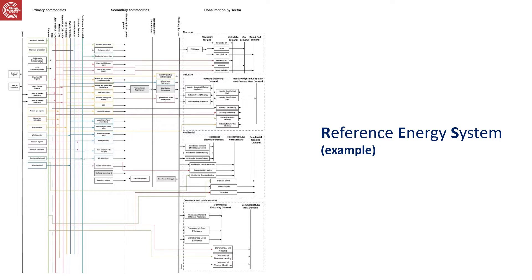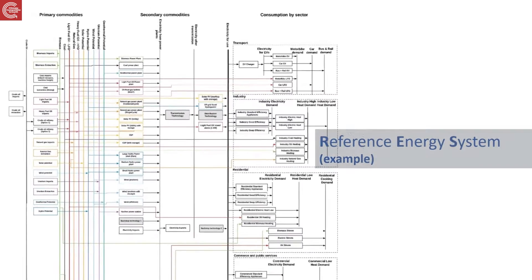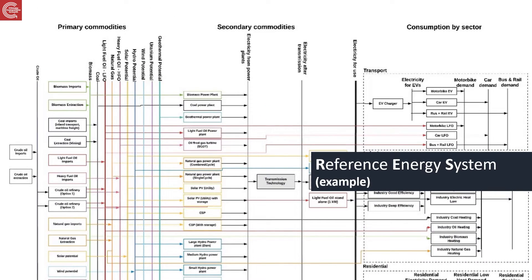As we know, modeling requires a reference energy system, and for our exercise this is the reference energy system we have developed. Let's have a closer look at the energy transfer stages before we deep dive into the parameters. In a reference energy system, there are stages of energy transfer. The commodities are being transferred from one form of energy to another with the help of technologies, and finally being consumed by the end-use technologies on the right part of the diagram.